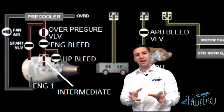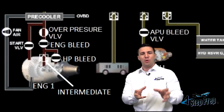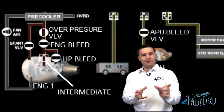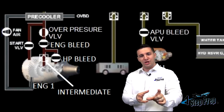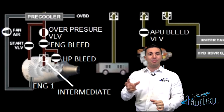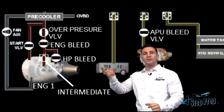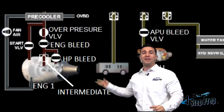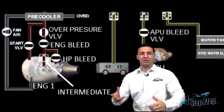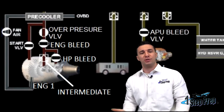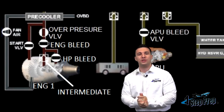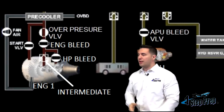The intermediate pressure stage is more towards the front part of the engine, and the high pressure stage is further towards the aft part, where obviously higher pressure is being generated by the N2 spool.